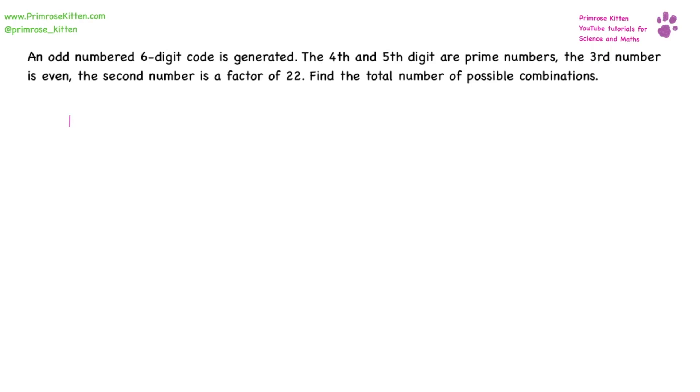Our six digit code is going to have one, two, three, four, five, six digits in it. The fourth and fifth are prime. The third is even. The second is a factor of 22. The last one has to be odd.